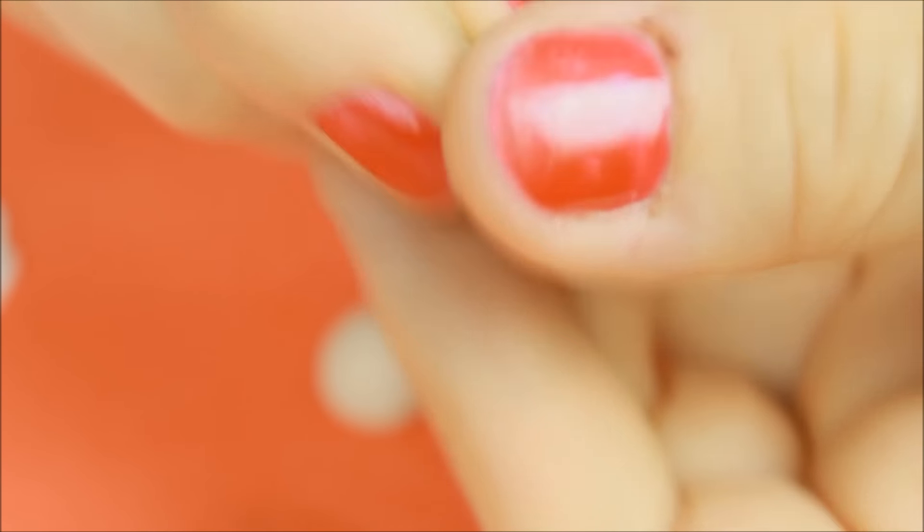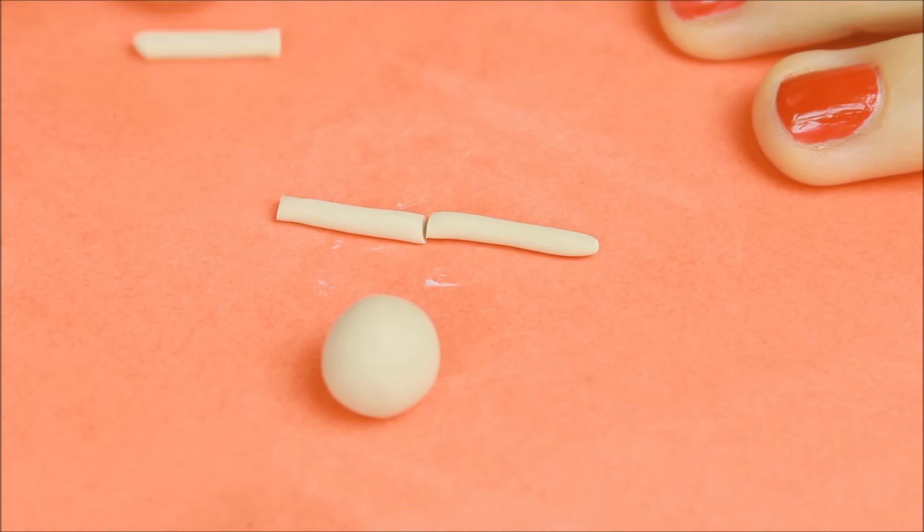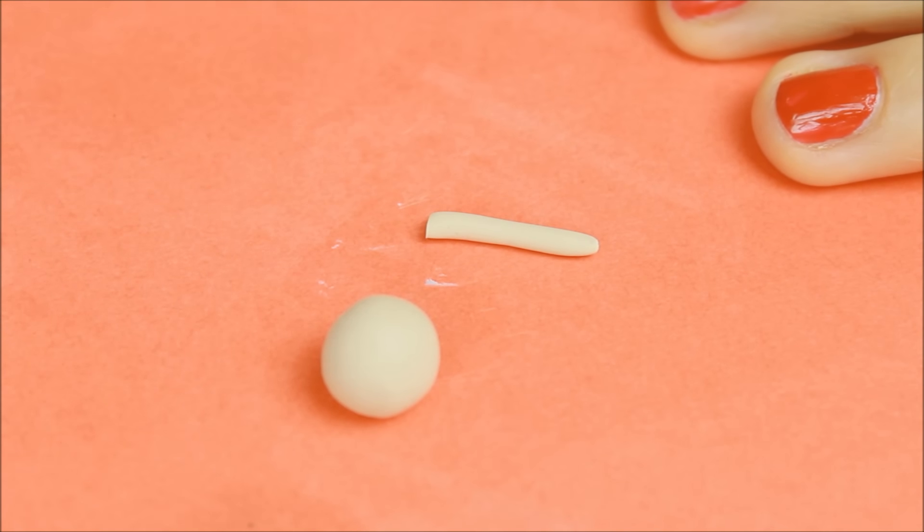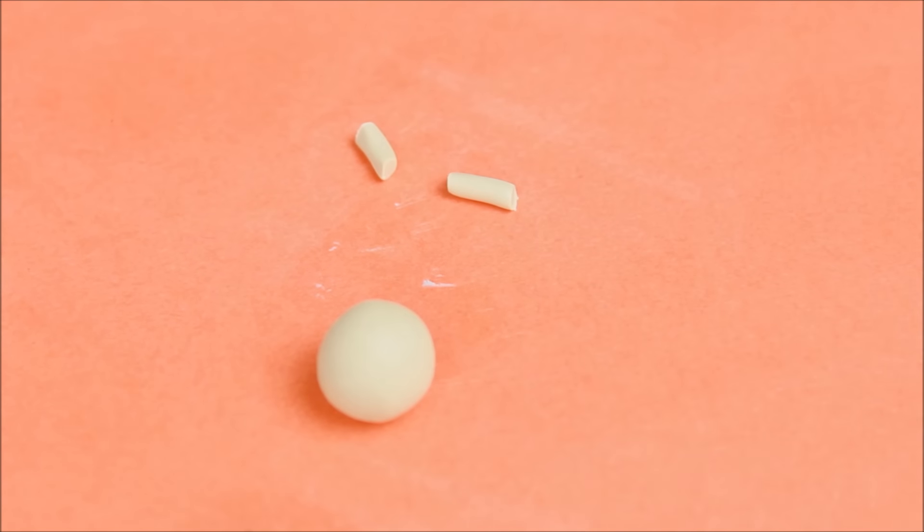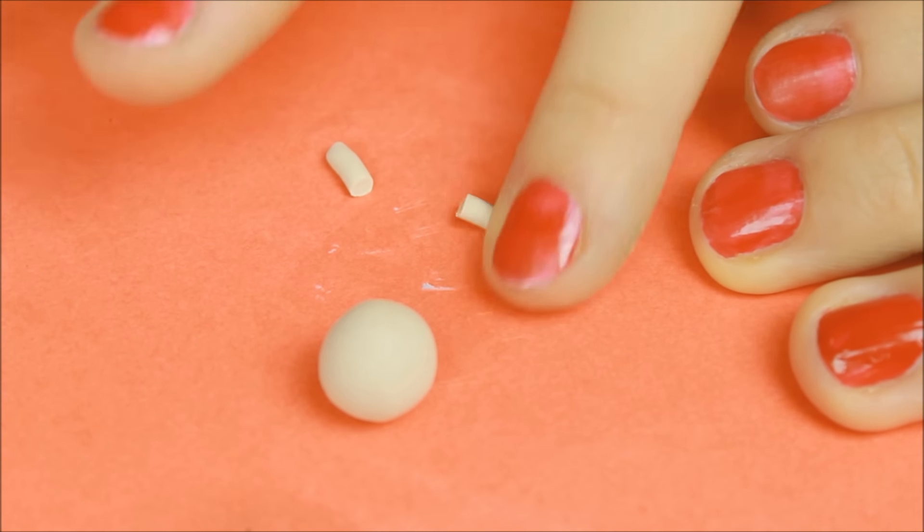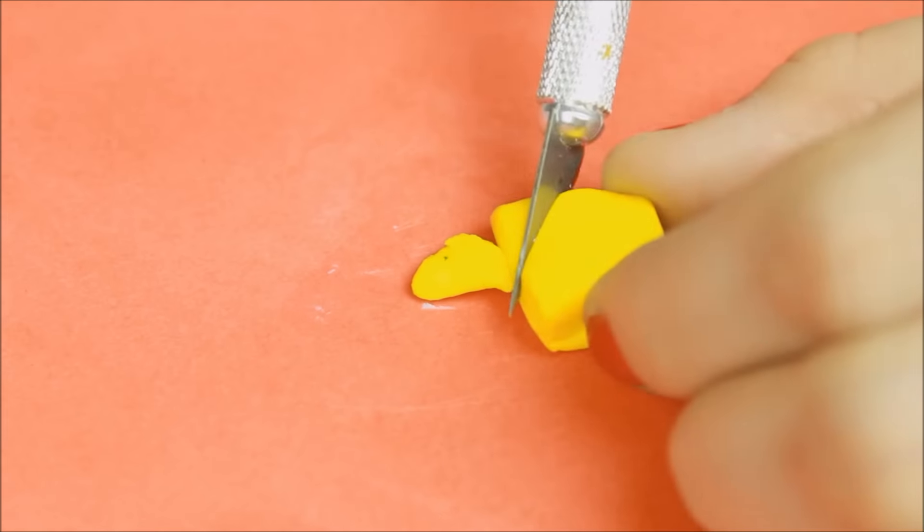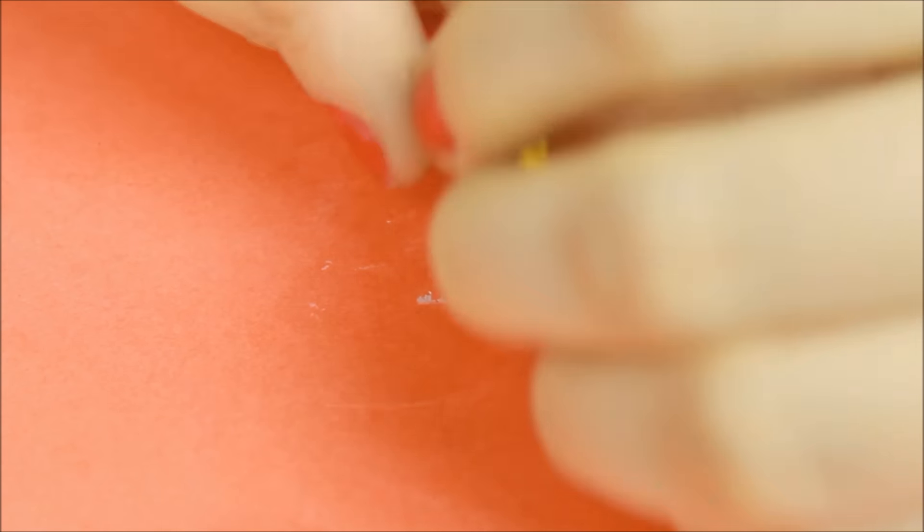Für den Kopf habe ich einfach hautfarbenes Fimo genommen und dann so zusammengerollt. Und nochmal ein kleineres Stückchen habe ich auch genommen und dann wieder zu so einer Art Wurst gerollt. Das brauchen wir nämlich für die Arme und für die Beine. Jetzt schneide ich für die Arme größere Stücke ab. Und für die Beine, weil die nur unter dem Rock hergucken, zwei kleinere Stückchen. Damit die Enden ein bisschen abgerundet sind, könnt ihr da auch nochmal so drüber rollen.